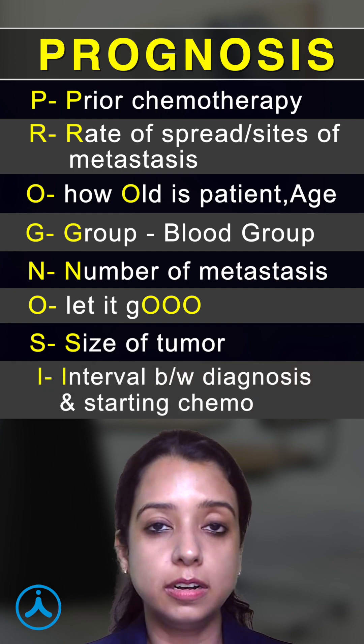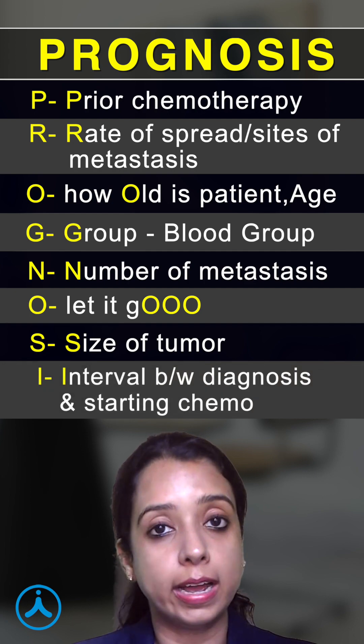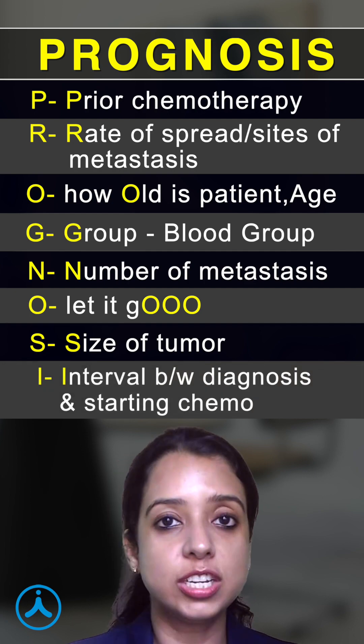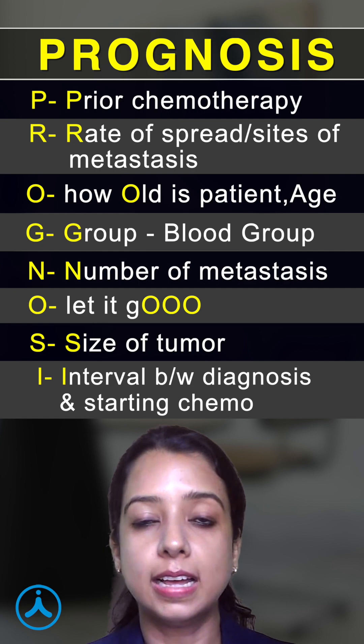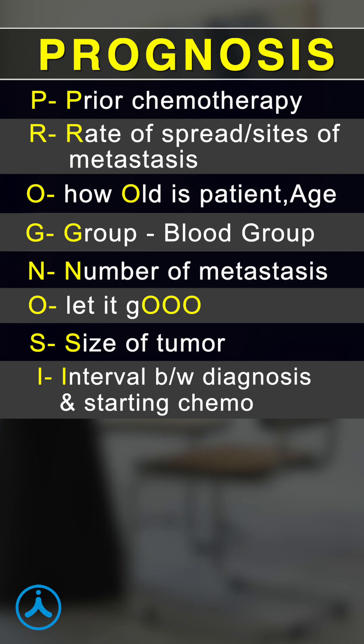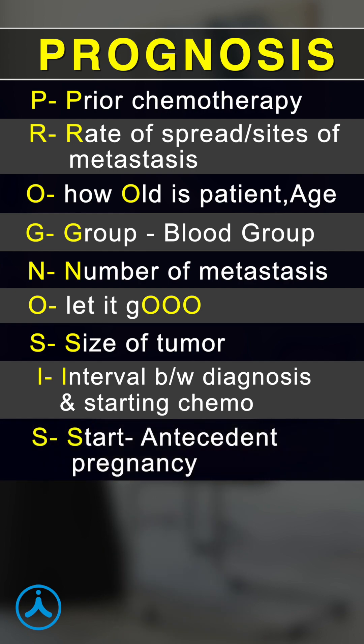S is size of tumor. I is interval between your diagnosis and start of chemotherapy. The last S is the start — how it all started. Was it a molar pregnancy, an abortion, or a full-term pregnancy? So what was the antecedent pregnancy? That is your last S.